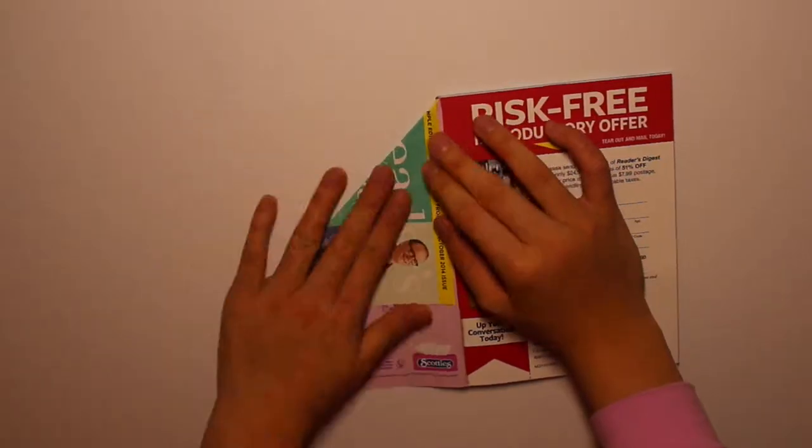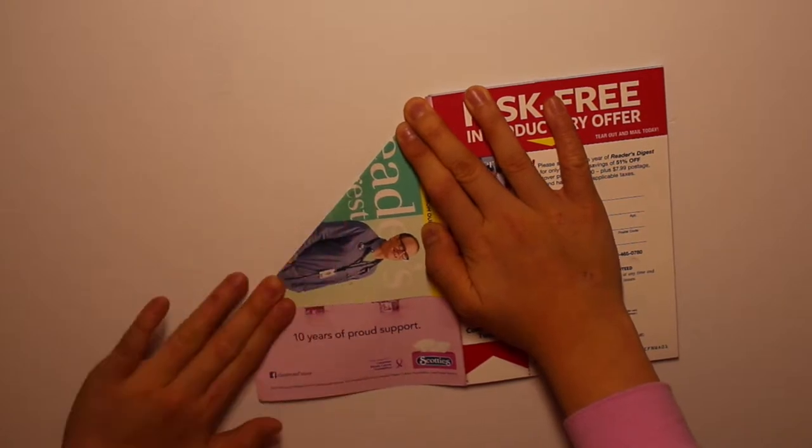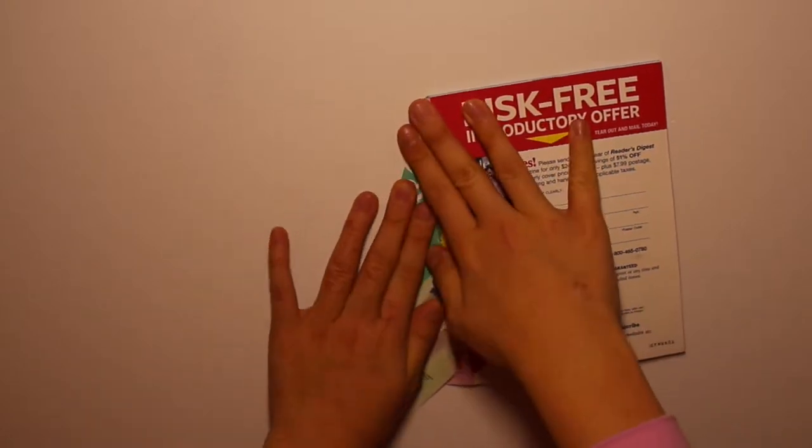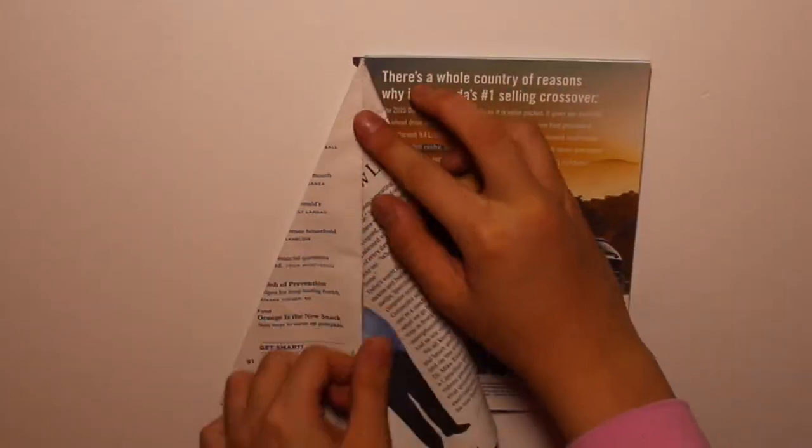So first you're going to cut off any of the covers, and I'm just using a mini Reader's Digest magazine. You're going to fold a triangle at the top and then fold it in half to make this triangle thing. And then just do that to all the pieces, to all the pages I mean.